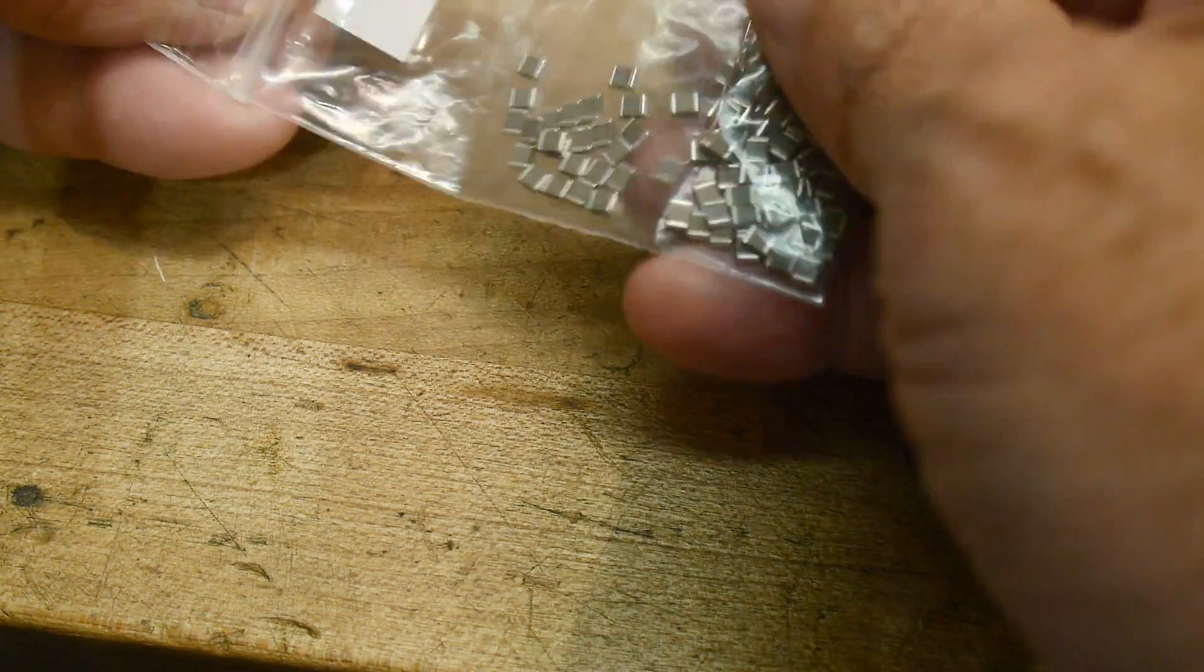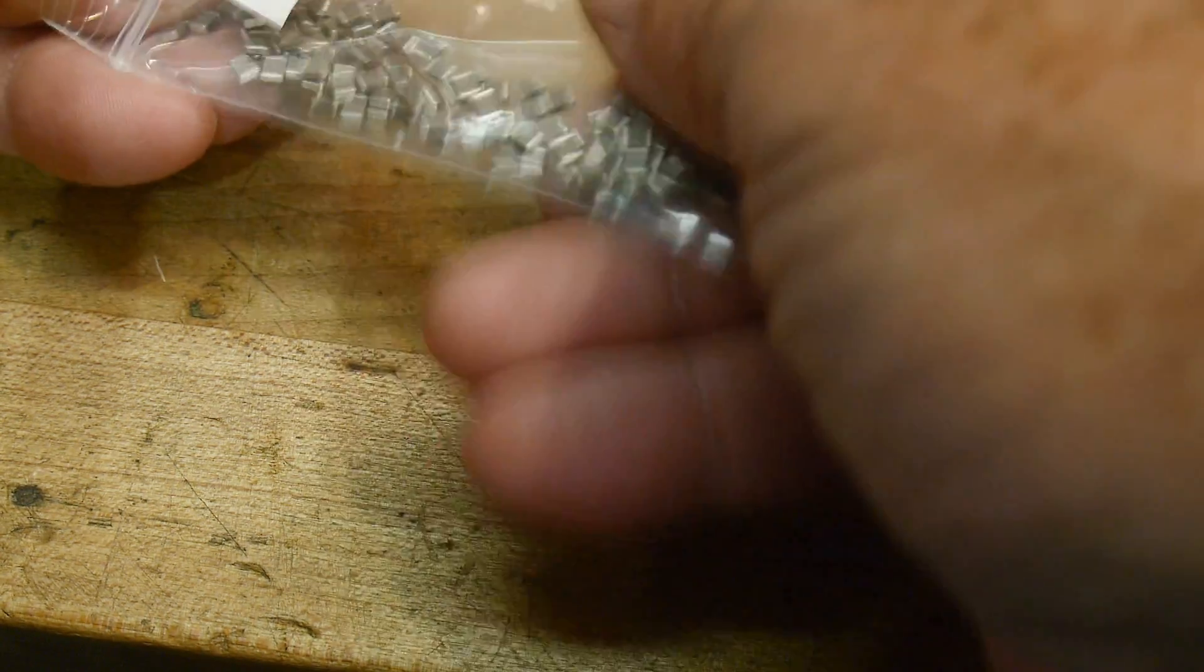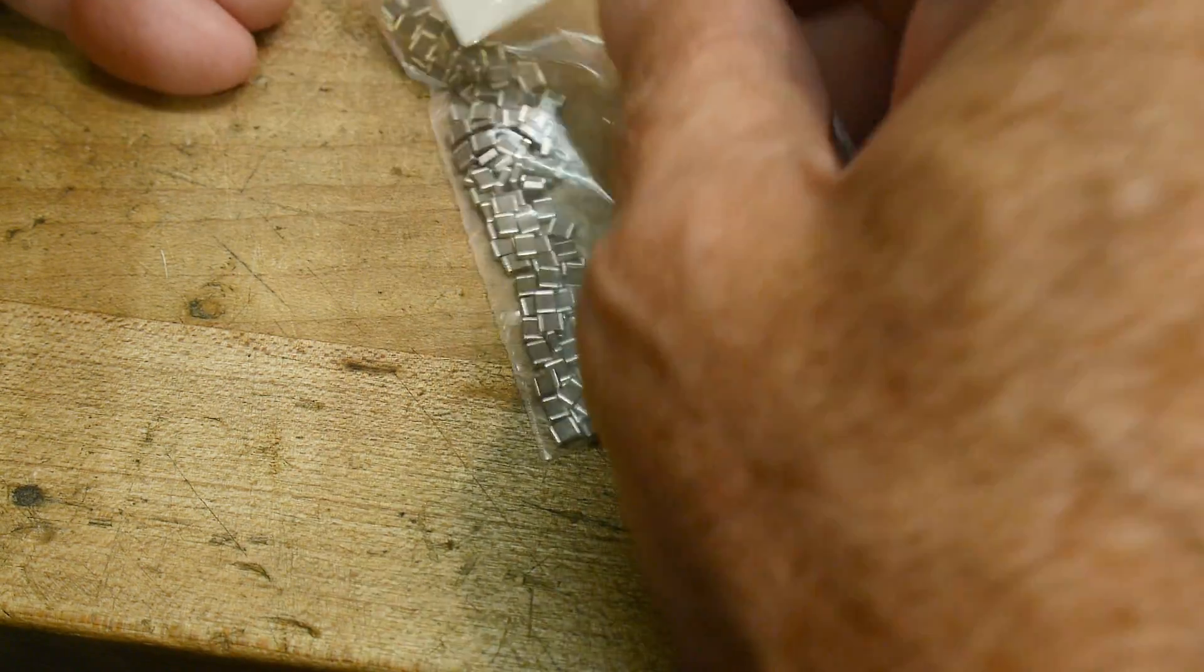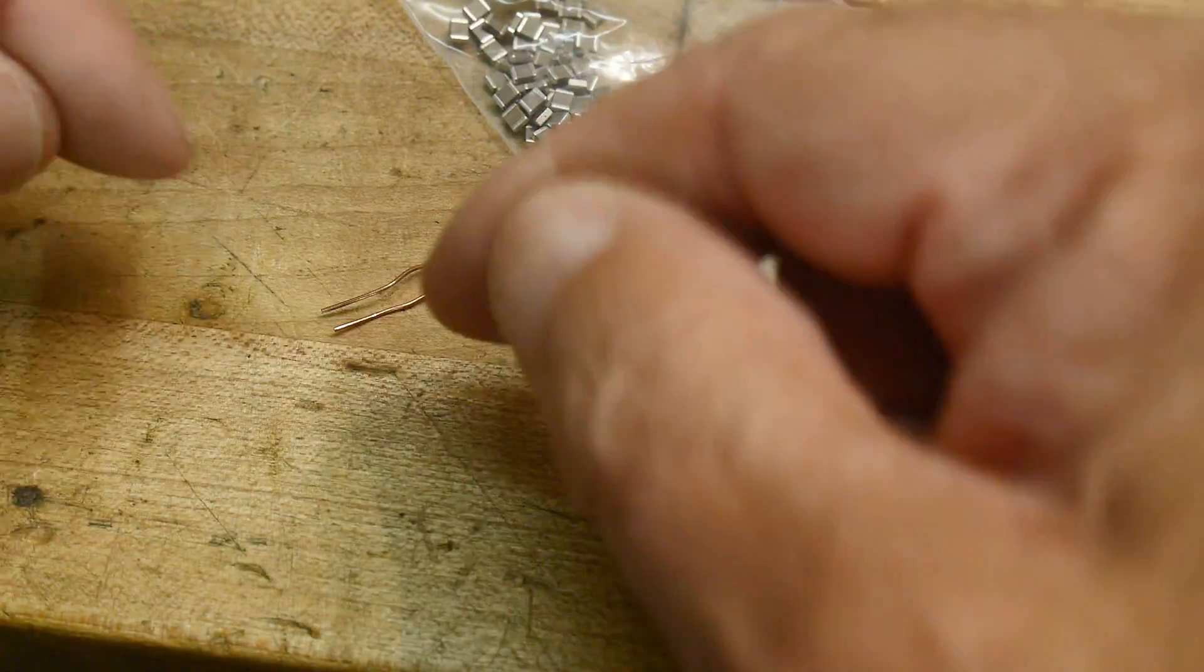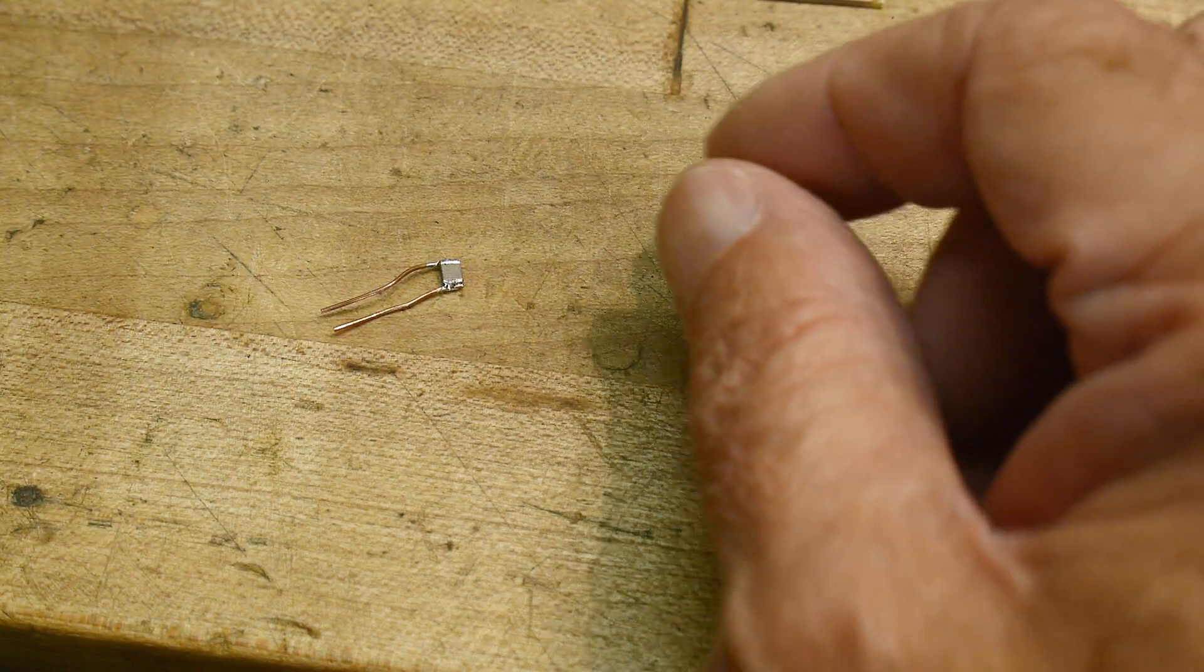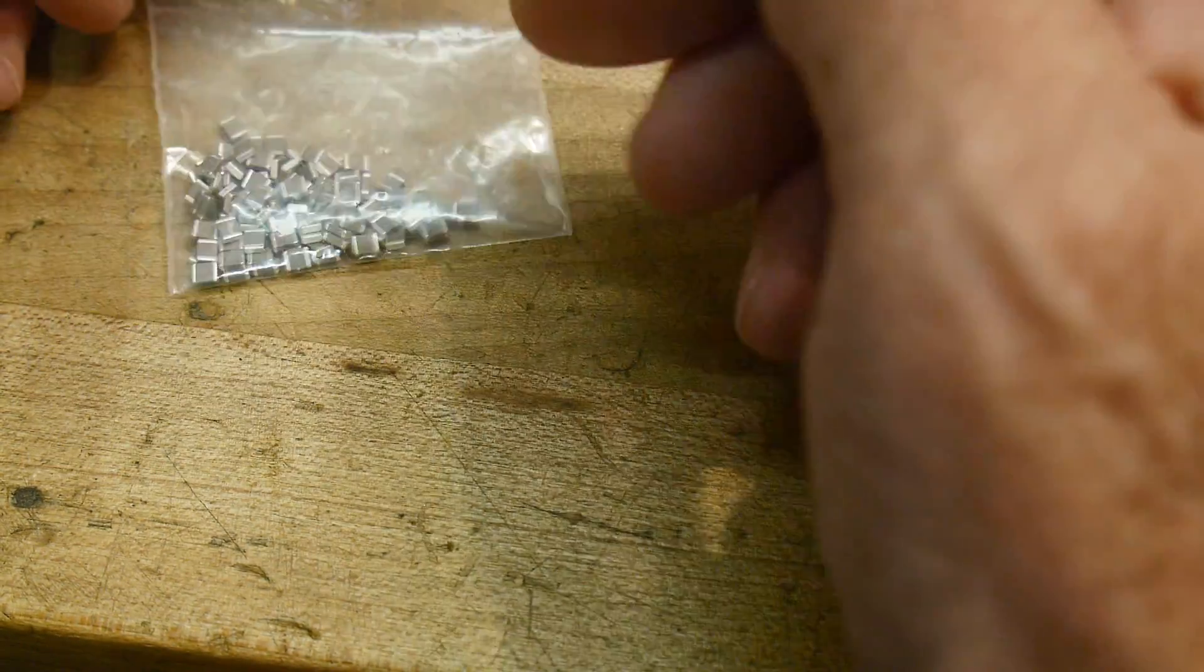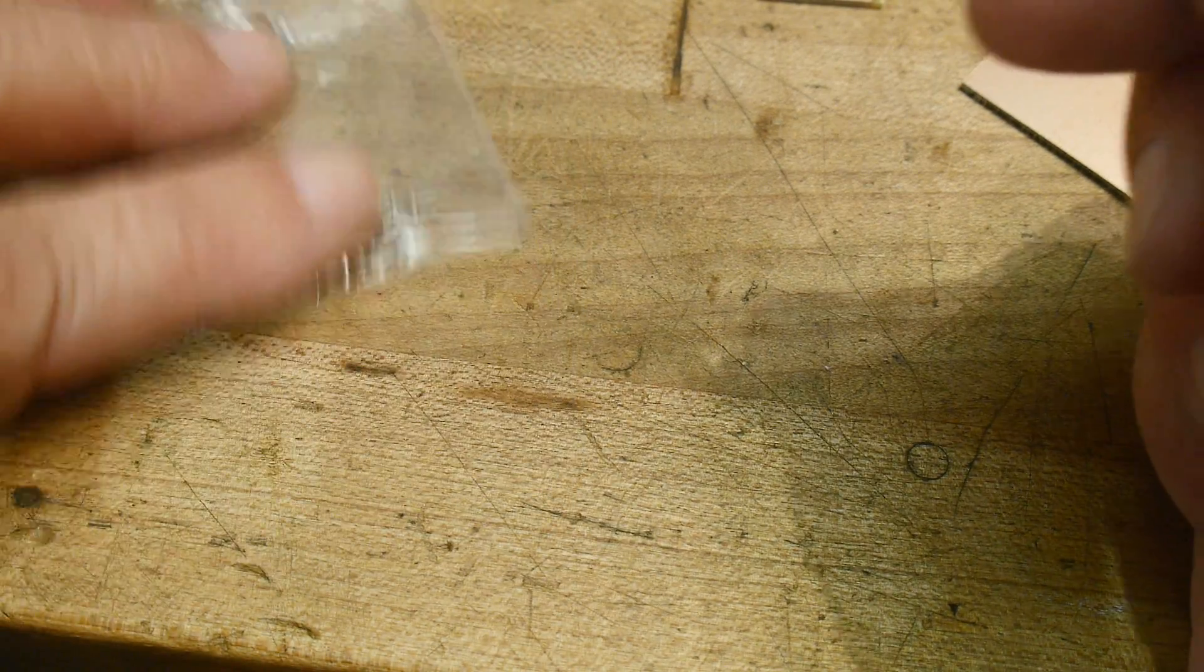So I came up with a solution. I took one and soldered some leads on them, then I can jam them in the socket and measure them, but now I've ruined one of them. Maybe I want to sort them or do something else, so I need to have a surface mount fixture for my LCR meter.